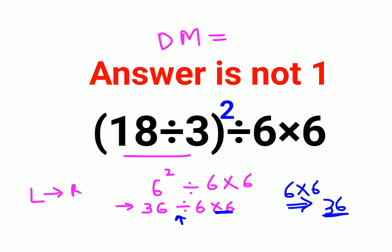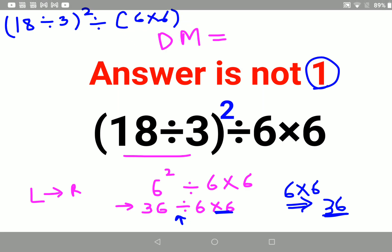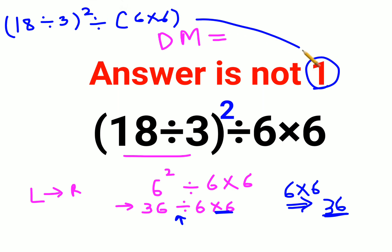Now you might be wondering when the answer will be 1. The answer will be 1 if the question was something like this: (18 divided by 3) squared divided by (6 times 6). In that case, yes, the answer would come out to be 1. But since there was no bracket given,